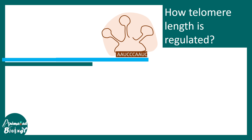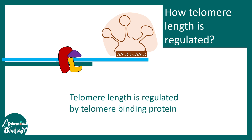Now the question is how telomerase length is regulated — how does telomerase know how much to extend the telomere? It doesn't do it too short and it doesn't do it too long. Latest research from yeast suggests that there are several telomere binding proteins which can regulate telomerase activity. Such proteins are RAP1, RIF1, and RIF2. They form a complex together and can potentially inhibit telomerase activity.